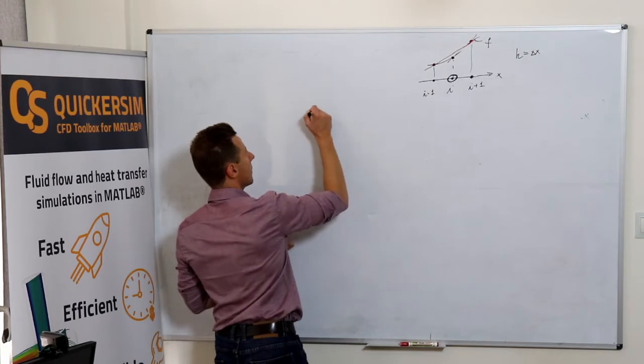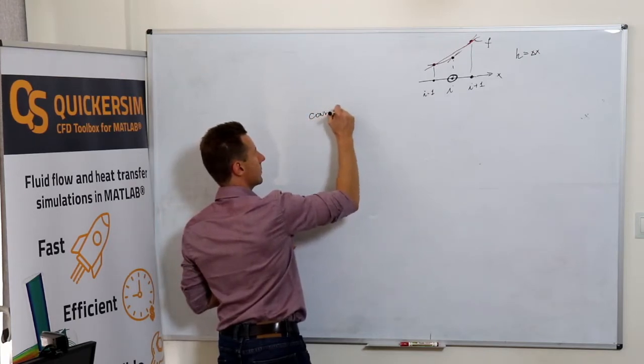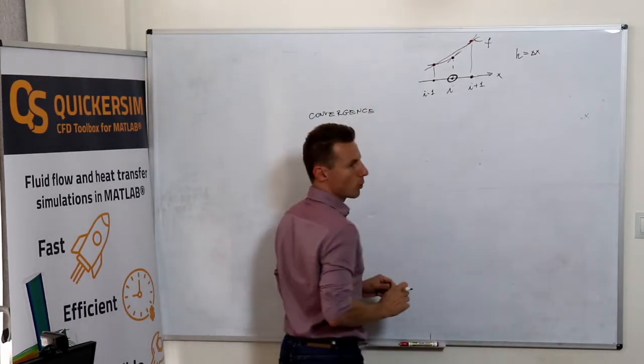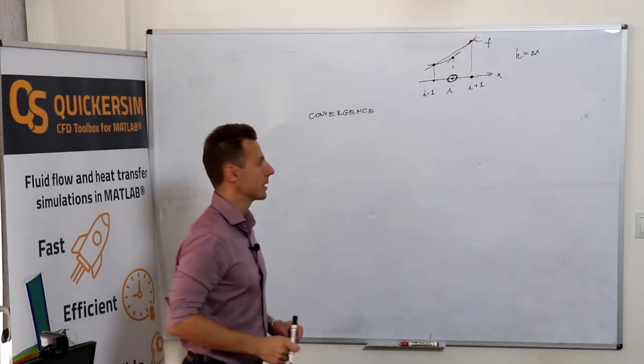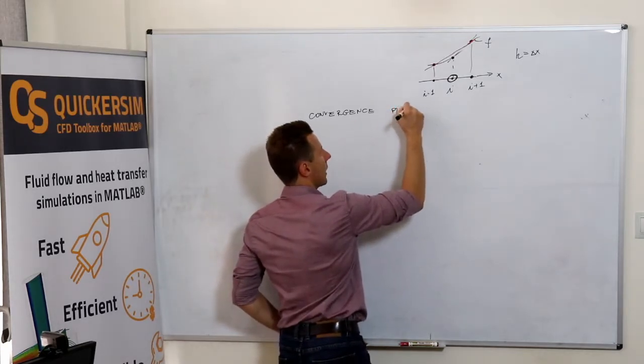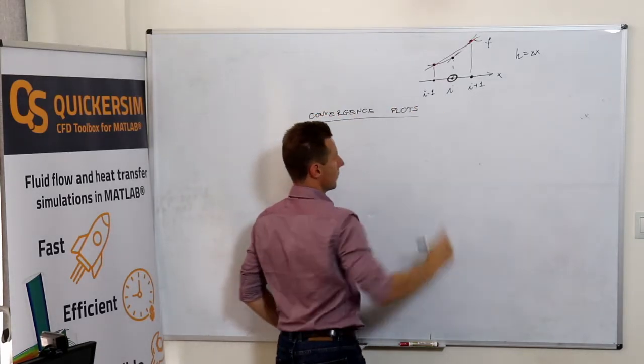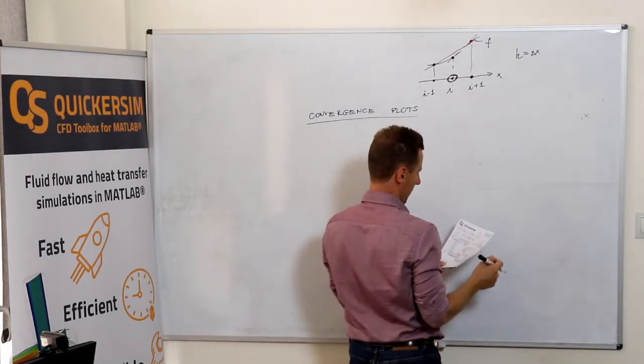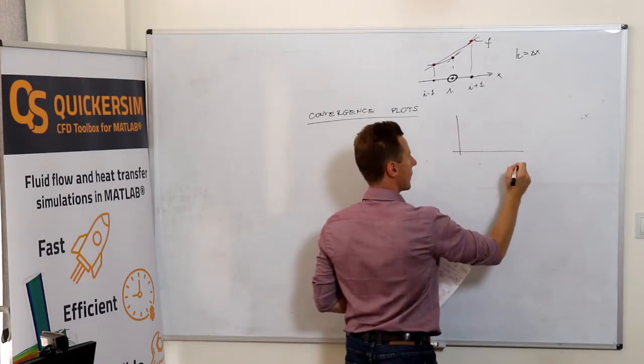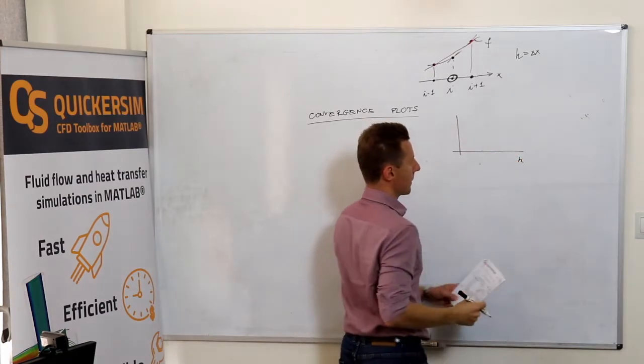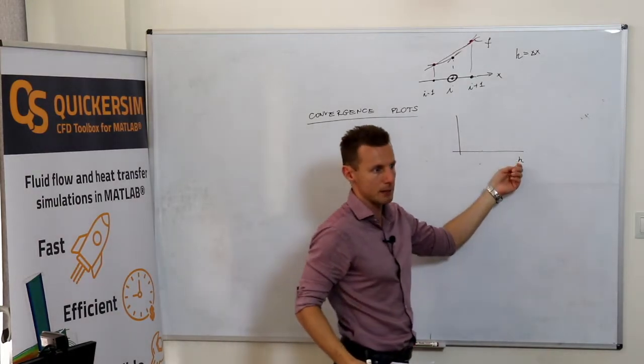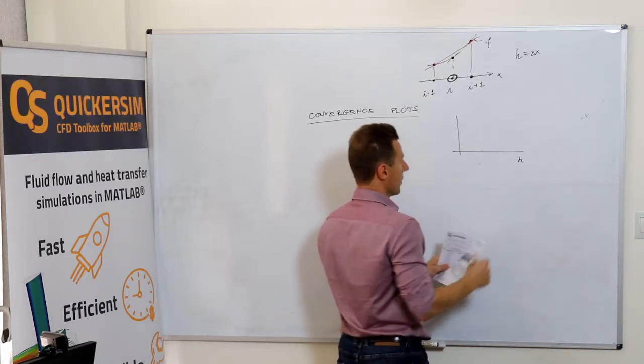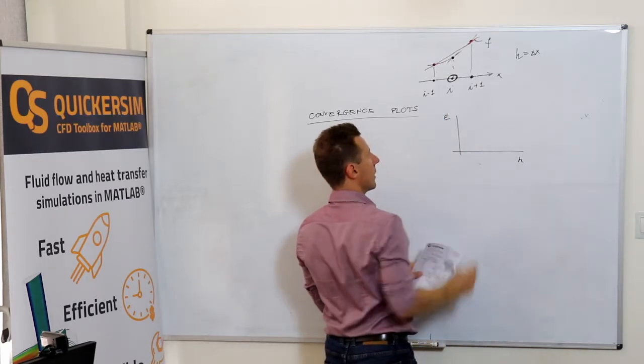So whenever you implement a numerical method and you want to test it rigorously, then I think you should really generate plots of this kind where you plot with respect to h, basically the spatial discretization or the time step size. If you're interested in the temporal discretization, you should plot the error.